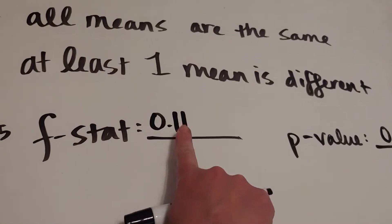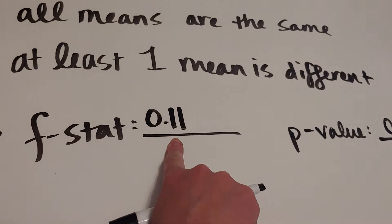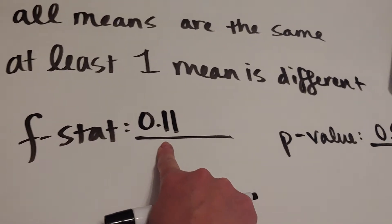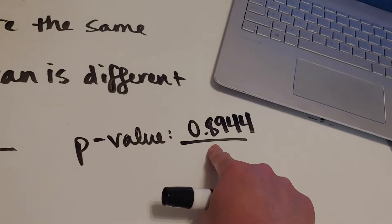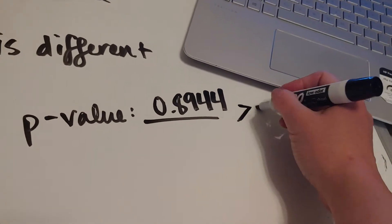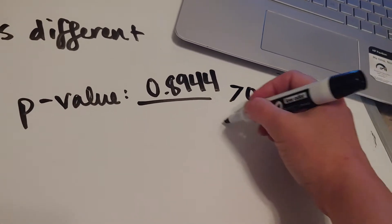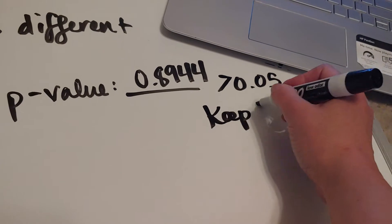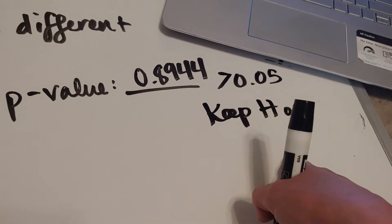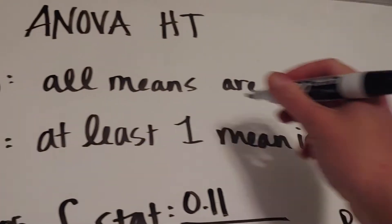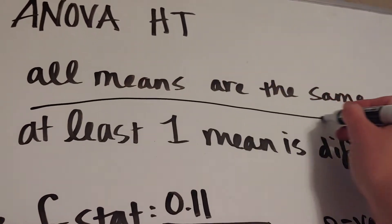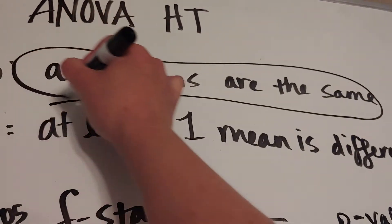So what it's basically saying is that I have a small F-STAT because everything lined up. If I have it all lined up, that means that nothing weird is going on. We're bigger than 5%. We keep the null. What that means is that if I keep the null, we're saying that this is true. All means are the same.